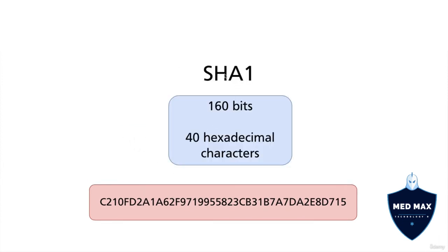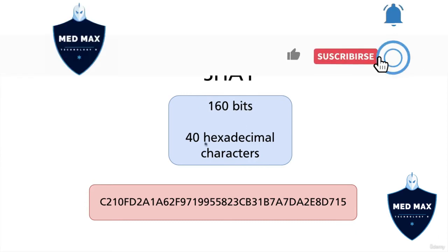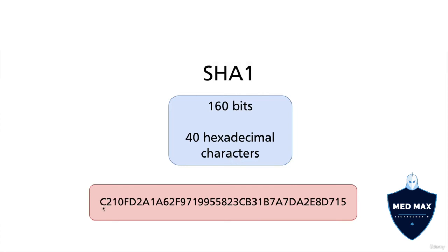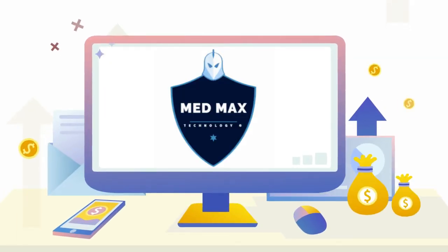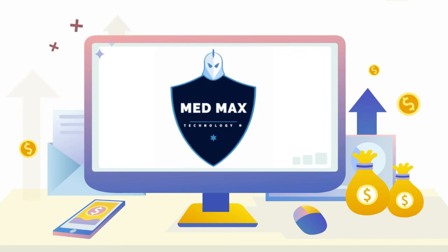And that's actually function that creates hashes in git, it is SHA1. It creates hash that is 160 bits long, or 40 hexadecimal characters. And here is an example of specific hash that was created by SHA1 hash function.